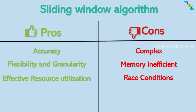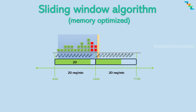There is a memory-efficient variant of sliding window. Here, individual request timestamps are not captured. Instead, the number of processed requests in the previous window is captured, and we assume a constant rate of requests during the previous fixed window period. For example, if we have 20 requests in the previous fixed window, it is treated as a constant rate of 1 request every 3 seconds.